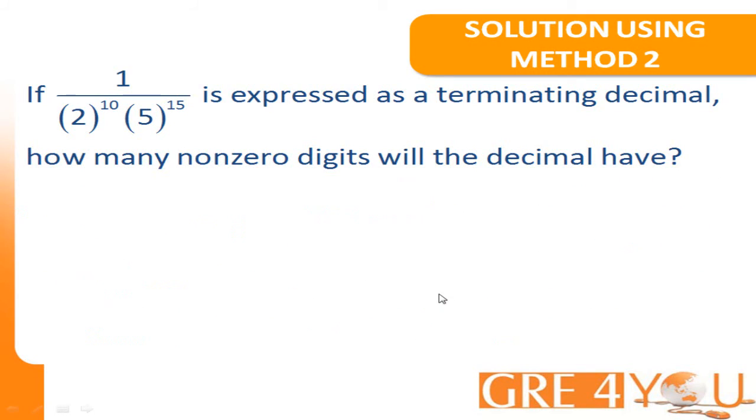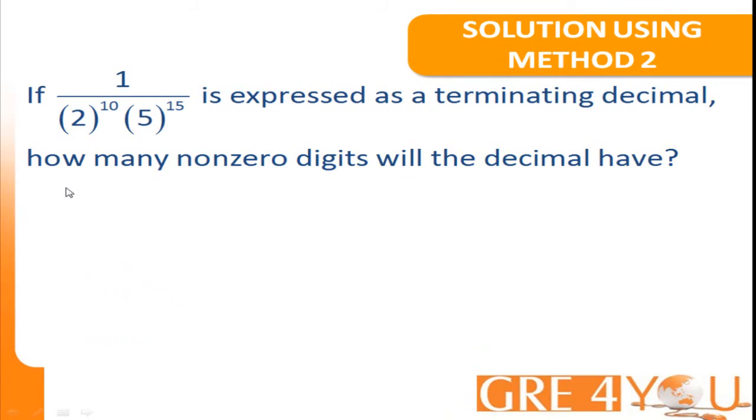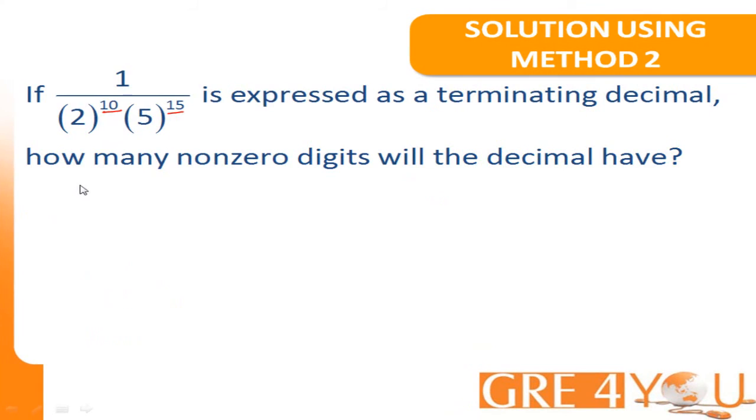Now, let's take a look at doing the same problem in an easier way. The key to solving this problem quickly is to observe that the exponent of the 2 which is 10 is 5 less than the exponent of 5 which is 15. We know that 2 power 1 times a 5 power 1 would give you a 10 power 1.